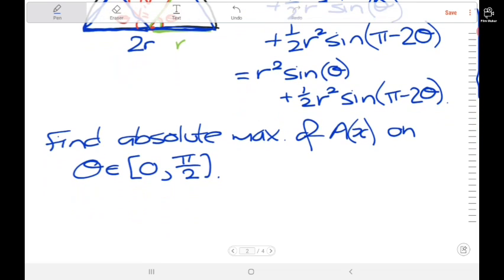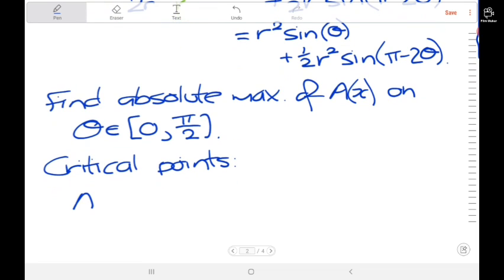Now the first task is find any critical points. So we want to differentiate A with respect to theta. Sine differentiates to cosine, we get r squared cosine of theta.